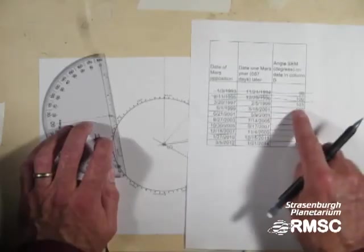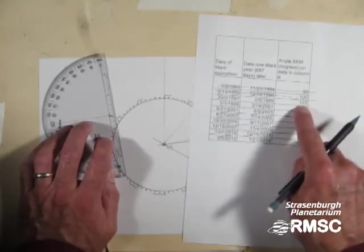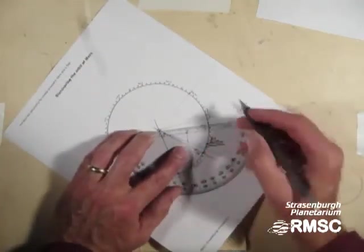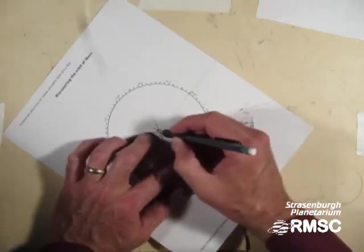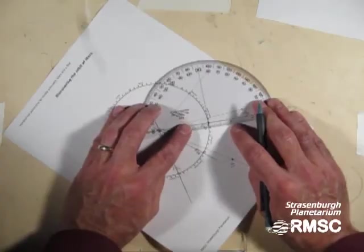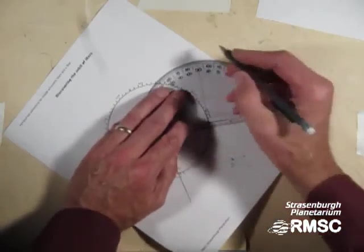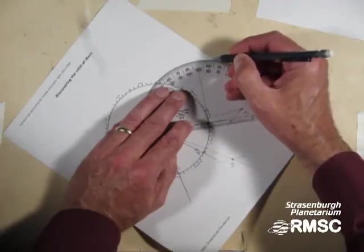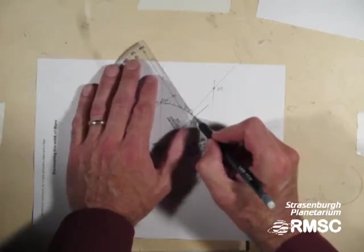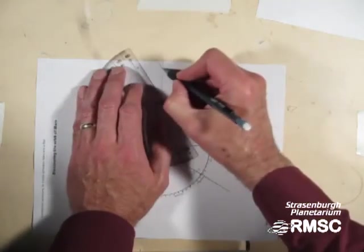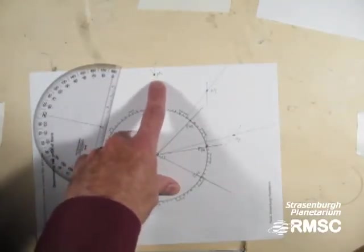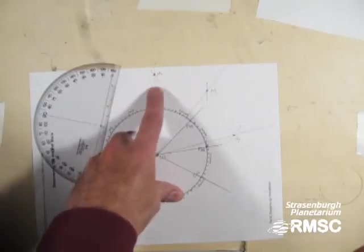And on February 5th, 1999, angle SEM was measured to be 103 degrees. So let's draw the SE line first. I want 103 degrees. Okay, there's 90, there's 100. 103 takes me to about there. And I've pinned down another point in the orbit of Mars. On two separate dates, one Mars year apart, Mars was here in space.